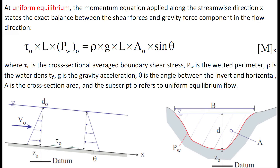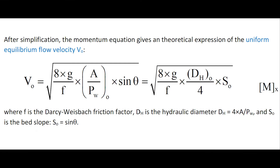At uniform equilibrium, the momentum equation applied along the streamwise direction states the exact balance between the shear force and the gravity force component in the flow direction. After simplification, the momentum equation gives a theoretical expression of the uniform equilibrium flow velocity, in which f is the Darcy-Weisbach friction factor, dh the equivalent pipe diameter, or hydraulic diameter.